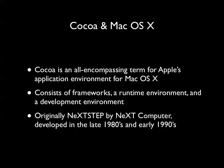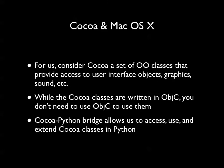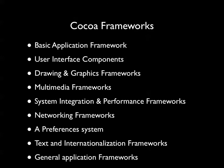As mentioned earlier, Cocoa was originally developed by NeXT Computer with the name NeXTSTEP in the late 80s and early 90s. But from a Cocoa Python perspective, we're going to consider it as a set of object-oriented classes that provide access to things like user interface, graphics, sound, and other objects — we're not going to consider the whole runtime environment. It allows us to access Cocoa, and while the frameworks are written in Objective-C, we don't need to know Objective-C to use them, which is what the Cocoa Python bridge provides.